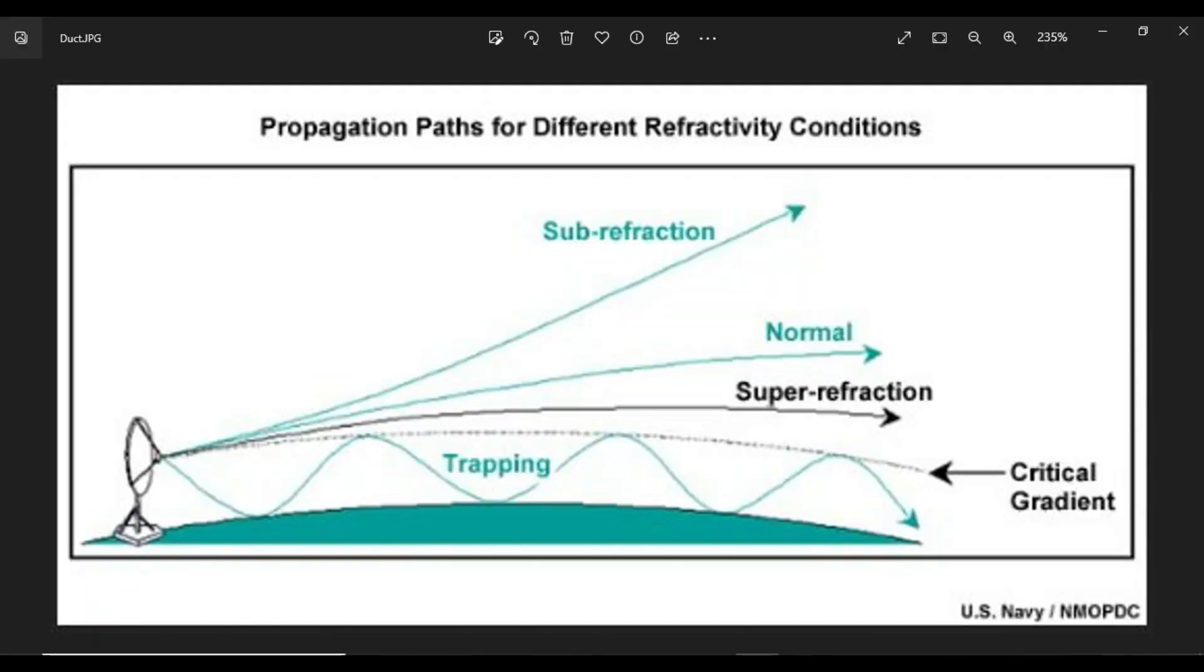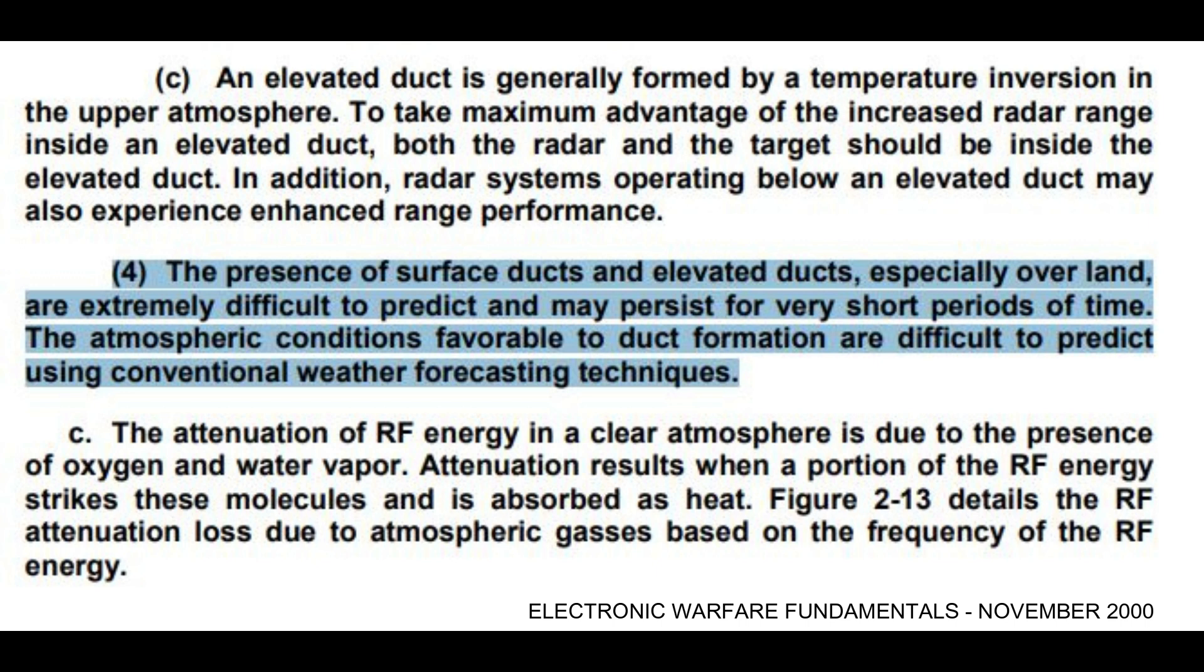Okay, so let's focus on this image produced by the US Navy. Let's say that this is an aircraft flying at 10,000 feet. And anything along this dotted line here is also at 10,000 feet. Which one of these conditions is more in line with this? I would suggest it's super refraction. And I would also suggest that super refraction must be occurring 100% of the time for a radar to function correctly. But that isn't correct because, as referenced here, the presence of surface ducts and elevated ducts, especially over land, are extremely difficult to predict and may persist for very short periods of time. The atmospheric conditions favourable to duct formation are difficult to predict using conventional weather forecasting techniques. So there you have it. Super refracting ducts or super refraction is only invoked to explain why some objects are able to be detected beyond the horizon and are not a normal occurrence.